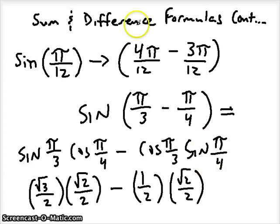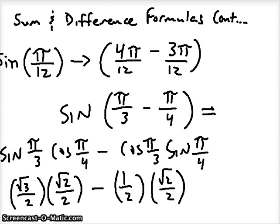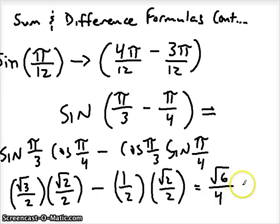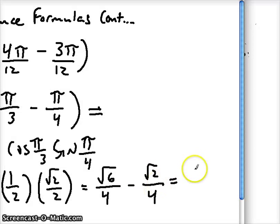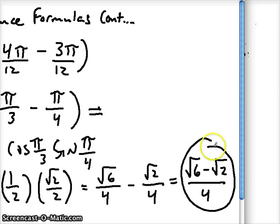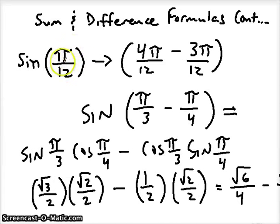When we simplify this, just multiply straight across: square root of 3 times square root of 2 is the square root of 6, and on the bottom we have 2 times 2 which is 4. We're going to subtract this product: 1 times square root of 2 is the square root of 2, and on the bottom 2 times 2 is 4. Since we have a common denominator, we can rewrite it all over one denominator. So we used the difference of sine formula to evaluate this radian angle measure.